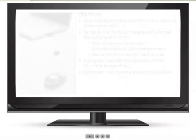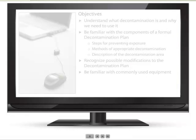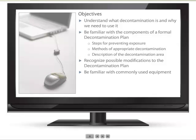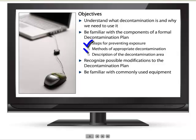Our objectives for this lesson are to understand what decontamination is and why we need to use it, familiarize ourselves with the components of a formal decontamination plan including the steps for preventing exposure, methods of appropriate decontamination, and a description of the decontamination area. We will also recognize possible modifications made to the decontamination plan and take a look at some commonly used equipment.